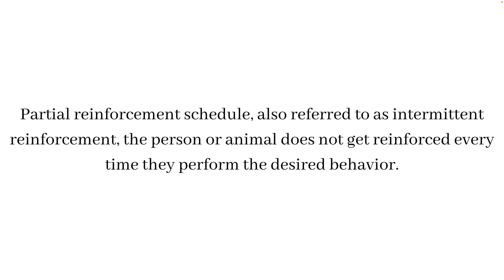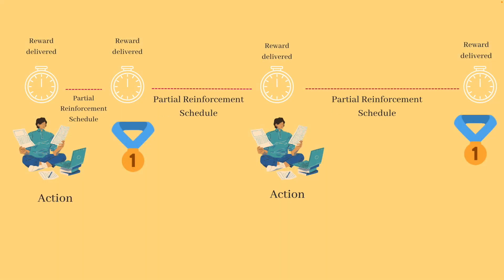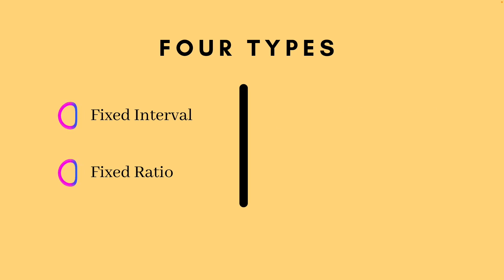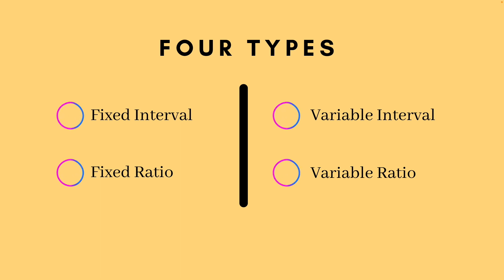Partial reinforcement schedules, also referred to as intermittent reinforcement schedules, are the type of schedules wherein an animal does not get reinforced every time they perform the desired behavior. In other words, the time gap or ratio of actions between the action taking place and the delivery of the reward or punishment is not predictable, unlike in the continuous schedule. There are four types of partial reinforcement schedules: fixed interval, fixed ratio, variable interval, and variable ratio.